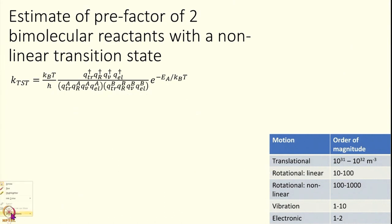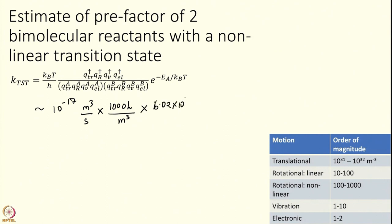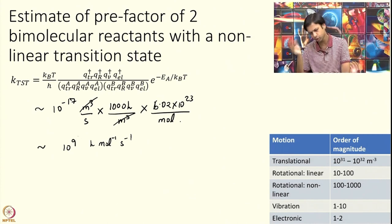Converting to units of liters and moles: from 10⁻¹⁷ m³ s⁻¹ per molecule, multiplying by Avogadro's number (~10²³ mol⁻¹) and converting m³ to liters (×10³), we get 23 + 3 = 26, and 26 − 17 = 9, giving a pre-exponential of roughly 10⁻⁹ L mol⁻¹ s⁻¹. This is the kind of number to expect for the pre-exponential factor of a bimolecular reaction.